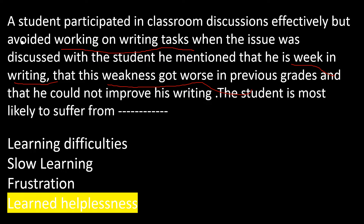There are always some probable distractors meant to distract you. First, remove the distractors. Frustration is a behavior — quickly remove this. Slow learning is a process where learning does take place at a slow pace, but here the student is not working at all and learning is deteriorating. The student said this weakness got worse in previous grades, so learning is not happening at all. You can remove these two distractors right away.